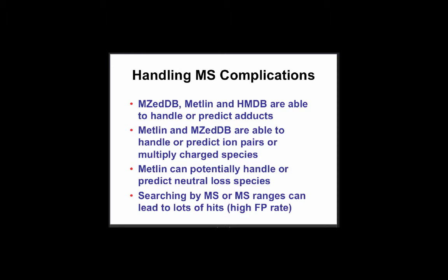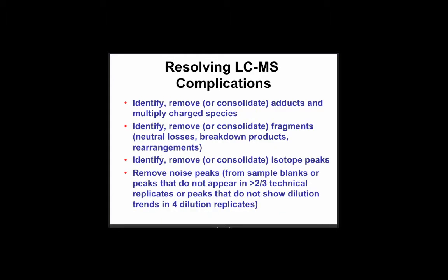So the cleanup steps are: remove and consolidate adducts and multiply charged species, remove and consolidate fragments and neutral losses, remove and identify isotope peaks (deisotoping), and remove noise peaks using sample blanks. As an example: if you start with 15,000 features in positive mode, removing adducts brings you to 12,000, removing multiply charged species to 10,000, removing neutral losses to 8,000, removing isotopes to 3,000, and removing noise to about 2,500 real peaks. Tools that help with this include MZmine, Netfusion, Magma, and commercial software.